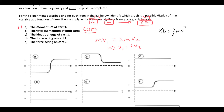Looking at this one, it kind of shows the right trend, but we can actually see something considerably more than halved. So this one's going to be the kinetic energy, because you can see it's being approximately quartered — so that one's B.